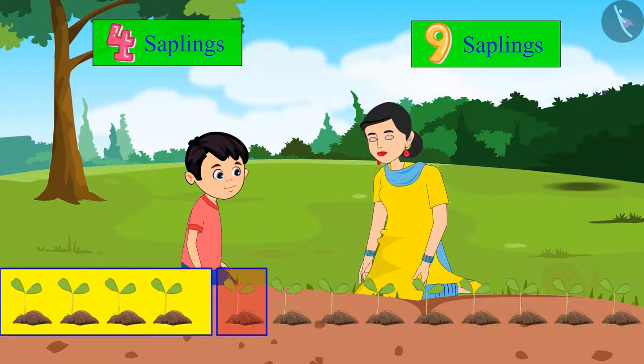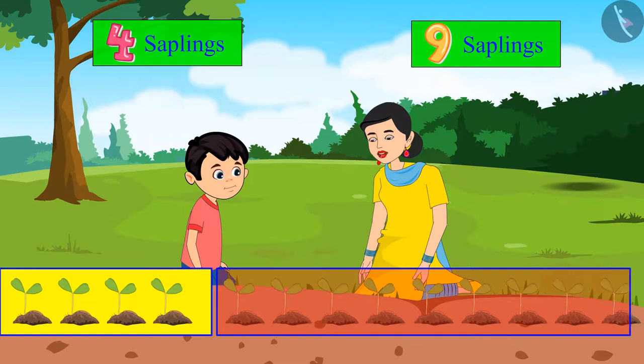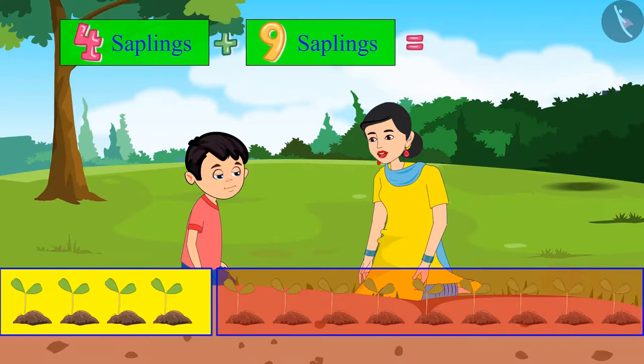this is the fifth sapling, this is the sixth, then seventh, eighth, ninth, tenth, eleventh, twelfth, thirteenth. That means we planted 13 plants in total.